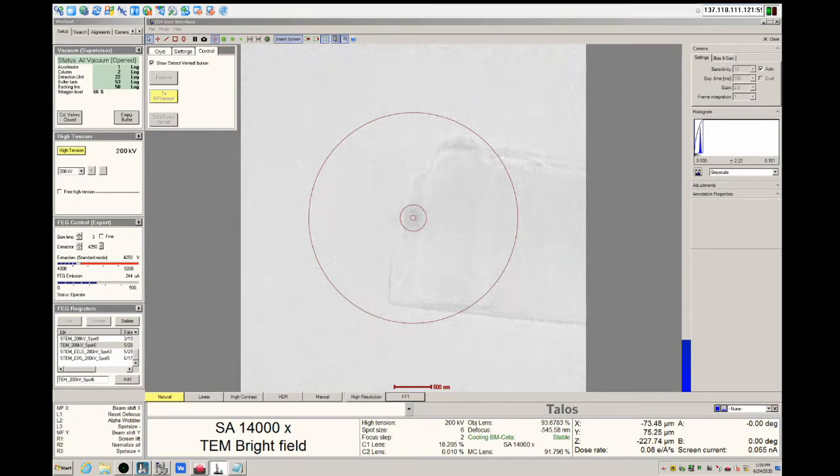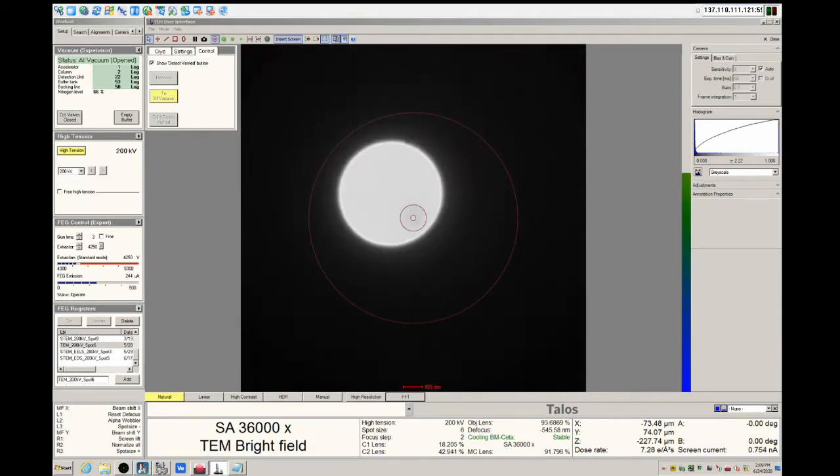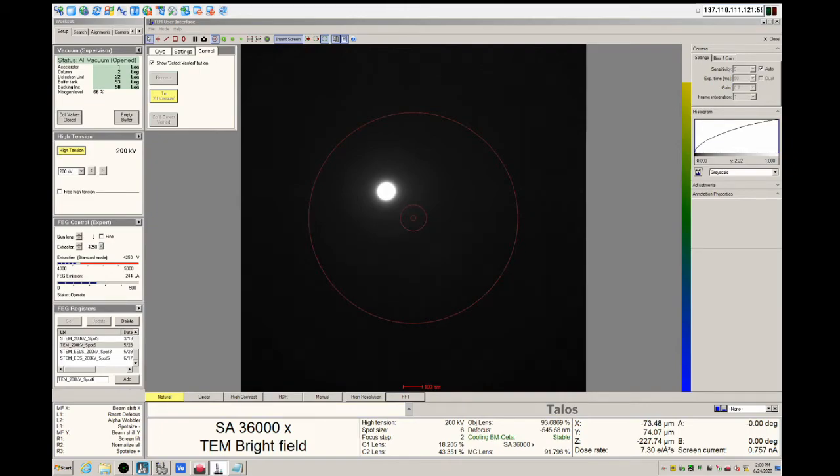Ideally, the next alignments are performed in vacuum. You may not be able to find a vacuum region easily on your sample, but in the case of a lamella, we can just move away from the lamella portion of the sample because empty space surrounds it. The first alignment requires a spot. Reduce the intensity using the intensity dial on the hand panel to form a spot.